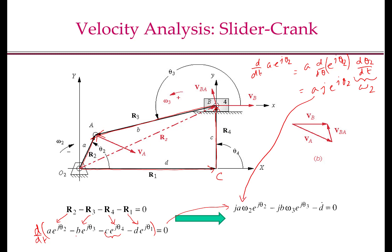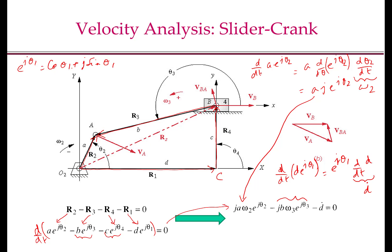The second term can be analogously obtained by taking the derivative of b e to the power of j theta 3. When taking the time derivative of the last term, note that theta 1 is constant — in the picture shown, theta 1 is 0. Since d changes with time, d/dt of d e to the power of j theta 1 equals e to the power of j theta 1 times d dot. With theta 1 equal to 0 degrees, e to the power of j theta 1 equals 1, so this term becomes simply d dot. This gives us our velocity level loop closure equation.